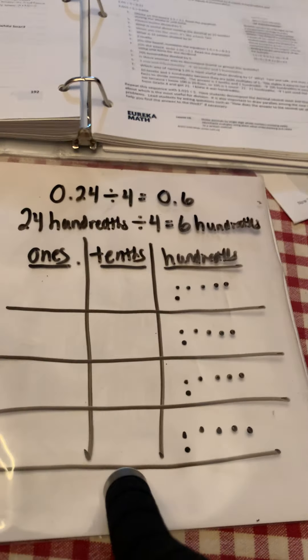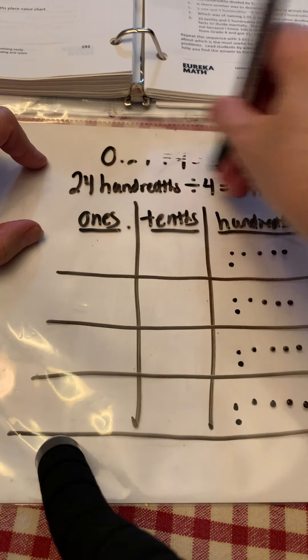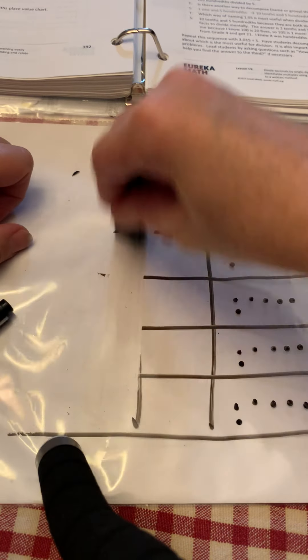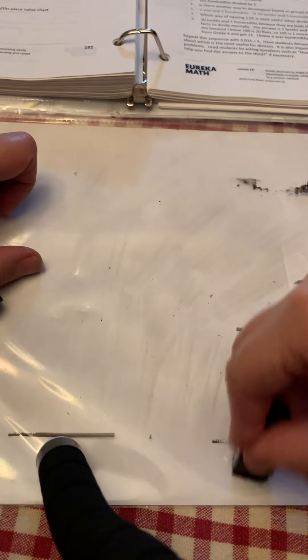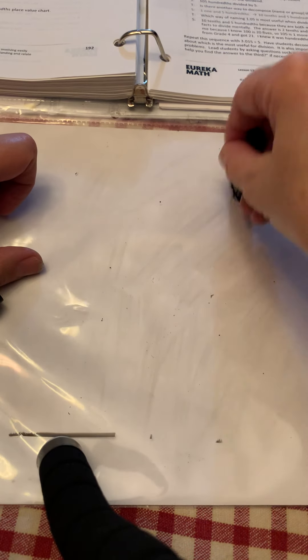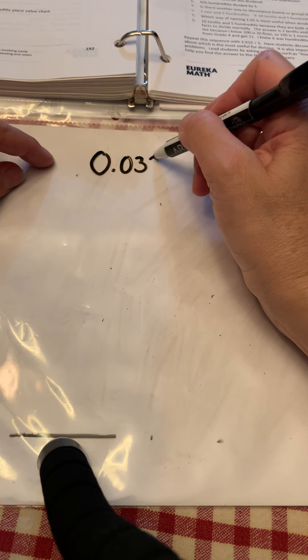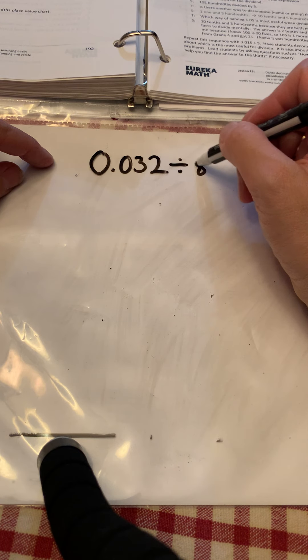Okay, is this making sense to you? Let's try another. Erase your board. And this time, we're going to try 32 thousandths divided by 8.